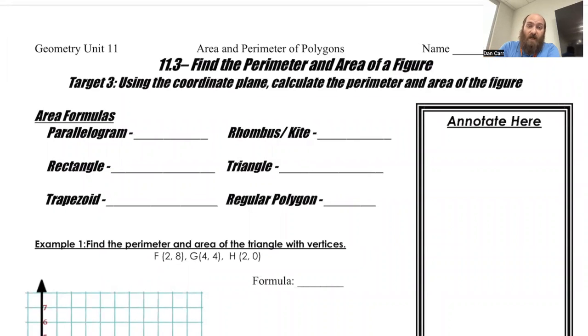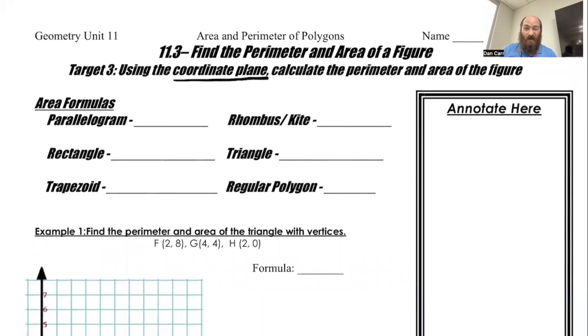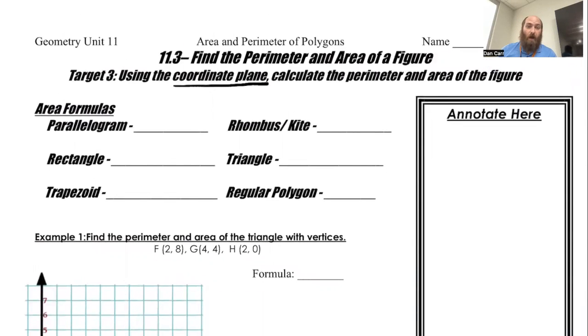Hey everybody, it's Mr. Carr again. Today we're going to be talking about 11.3, finding the perimeter and area of a figure, but we're going to do it on a coordinate plane. Sorry about the jump there, it's being a little bit tricky for me today. All right, but we're going to do it on a coordinate plane.